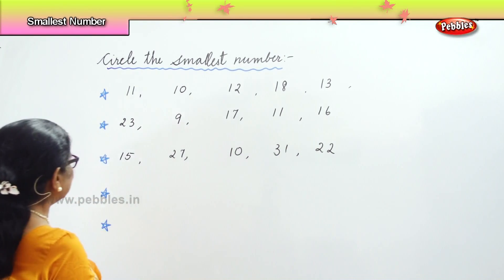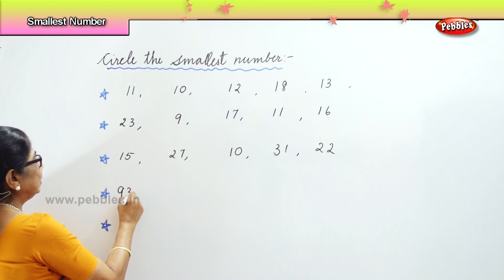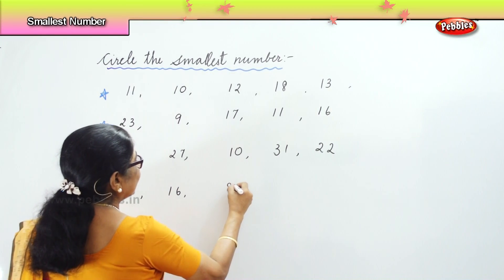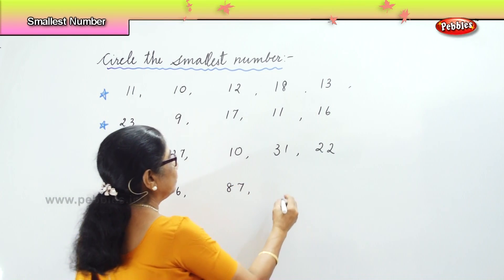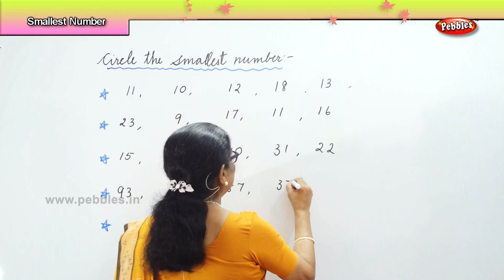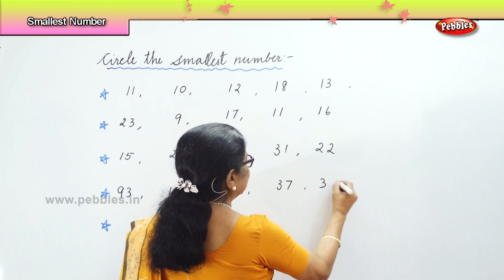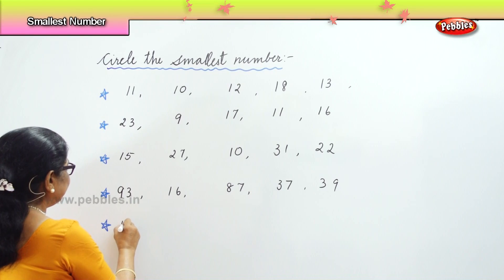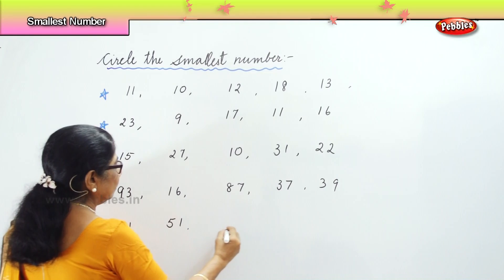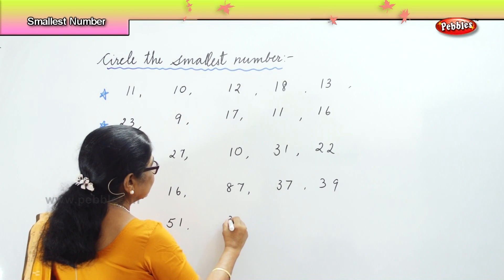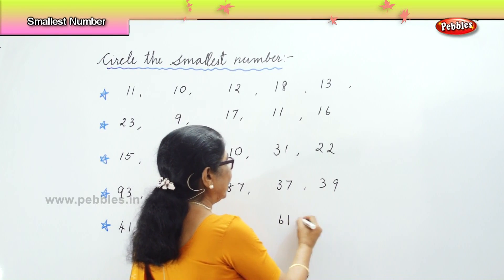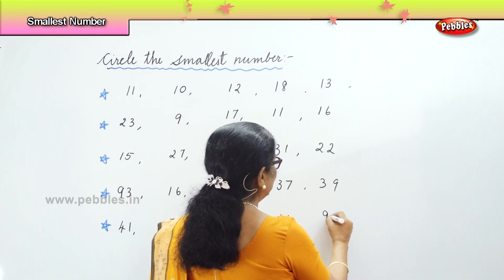Another set I have here: ninety-three, sixteen, eighty-seven, thirty-seven, thirty-seven, thirty-nine. Then the last one: forty-one, fifty-one, thirty-three, sixty-one and ninety-one.